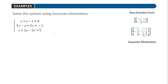In this video, we're going to solve the system x plus y minus z equals 4, 3x minus y plus 3z equals negative 2, and x plus 2y minus 3z equals 5 using Gaussian elimination. Gaussian elimination is a process to use an augmented matrix and elementary row operations to get ones on the diagonal and zeros below it. Once we have it in that form, we'll convert it back to the system and use back substitution to solve for the other variables.